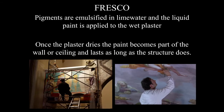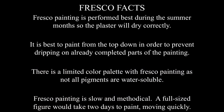When you go to the Sistine Chapel, it looks as beautiful today as when Michelangelo painted it 500 years ago. A couple of things to know about fresco: it is painted during the warm summer months so the plaster dries correctly; as with any type of painting, we paint from the top down to prevent dripping on completed sections; there is a limited color palette because not all pigments are water soluble; and fresco painting is not only slow, it must be very methodical — a full-size figure would take about two days to paint at a rapid pace.